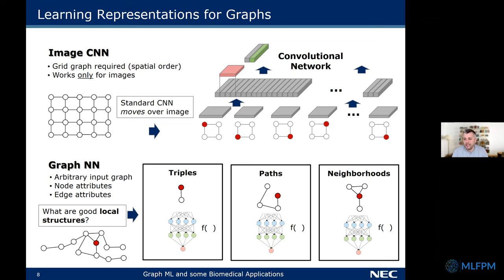I like to start explaining graph-based machine learning by starting with the success story of convolutional networks for images. An image can be looked at as a grid graph. The convolutional neural network moves a small local kernel — typically three by three pixels — from left to right and top to bottom over the image. By stacking more layers, it builds from local to more global feature representations. For arbitrary graphs, where top-to-bottom and left-to-right don't exist, we need good local structures as a substitute for the square-shaped grid.